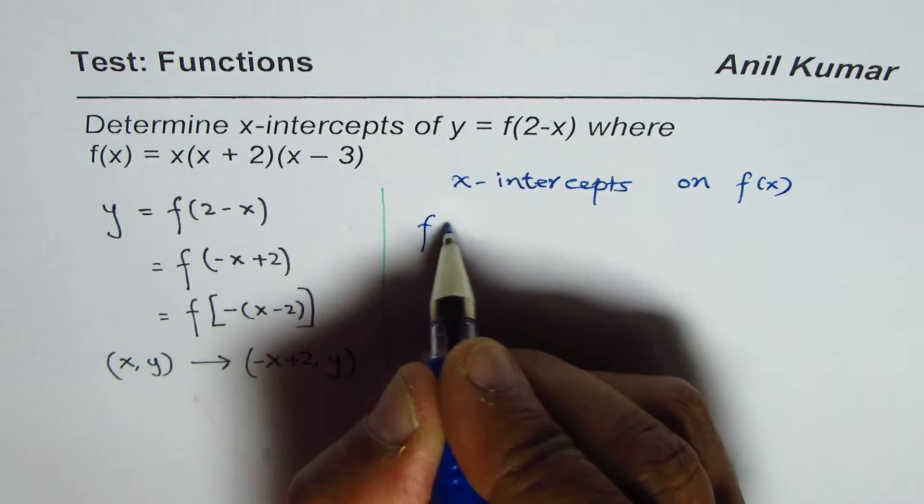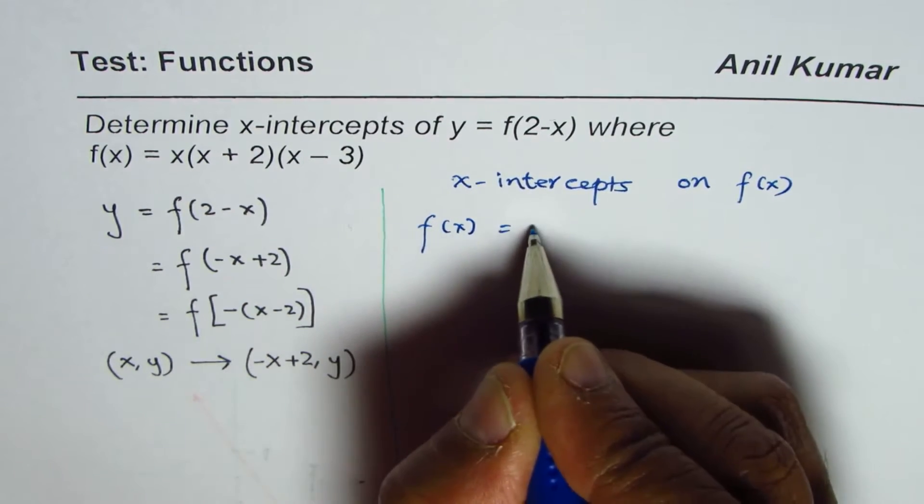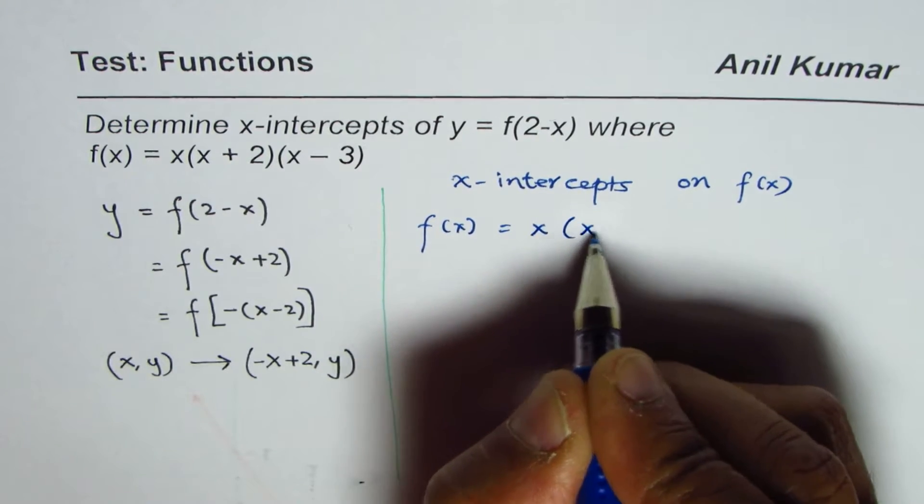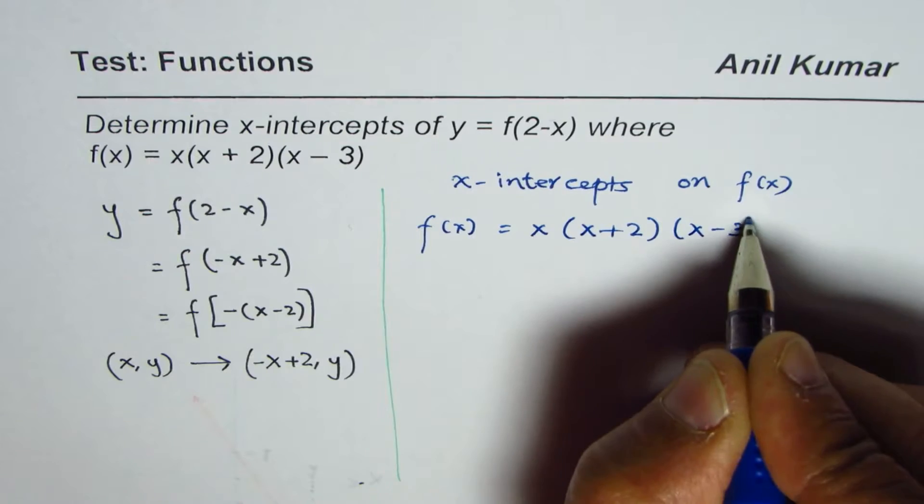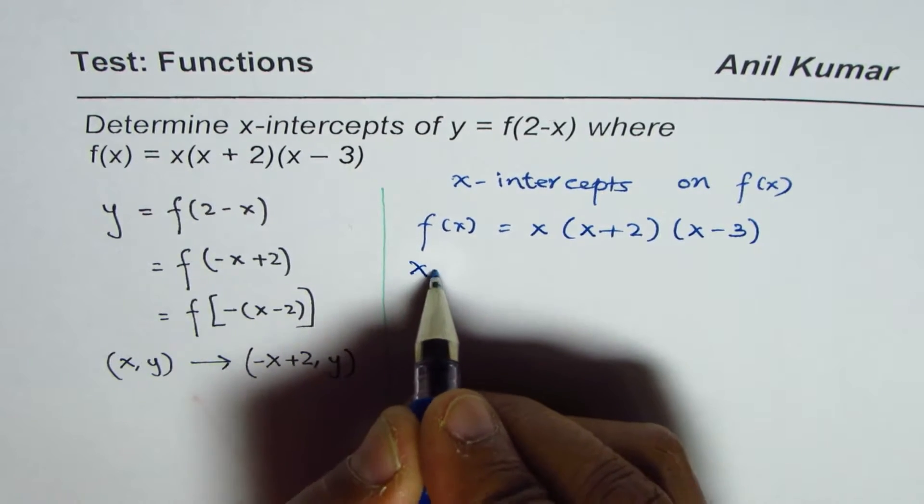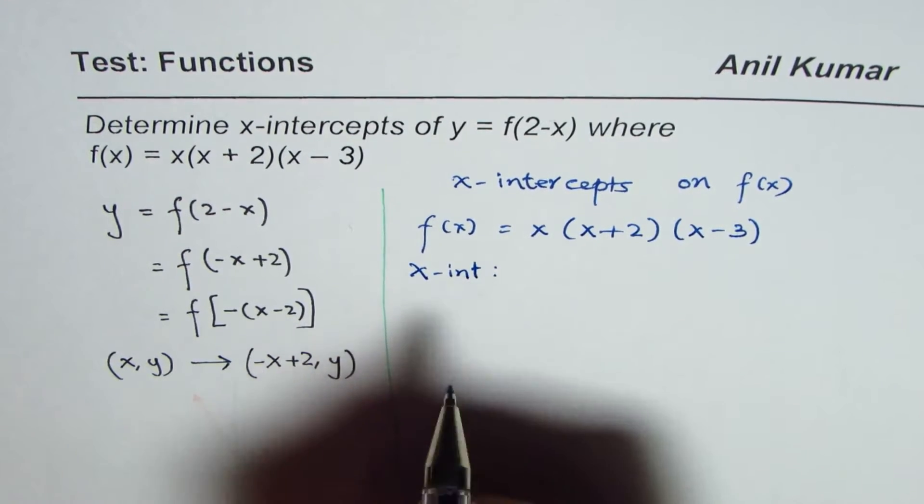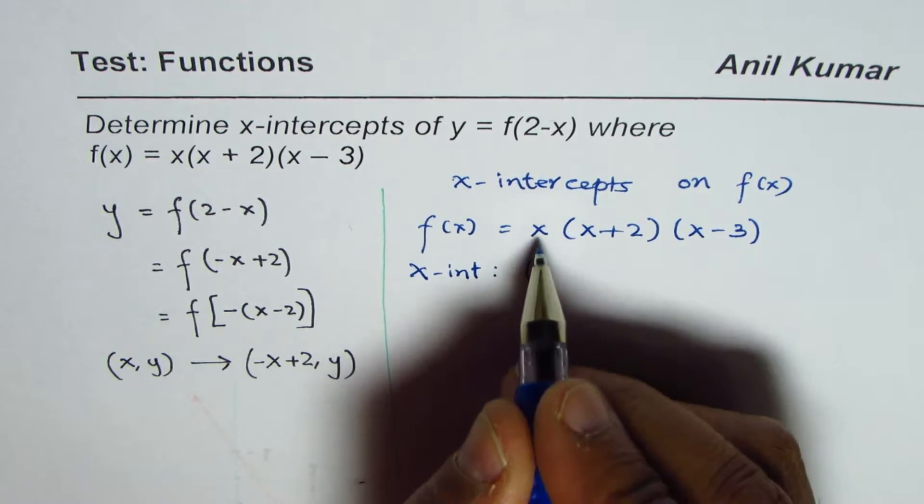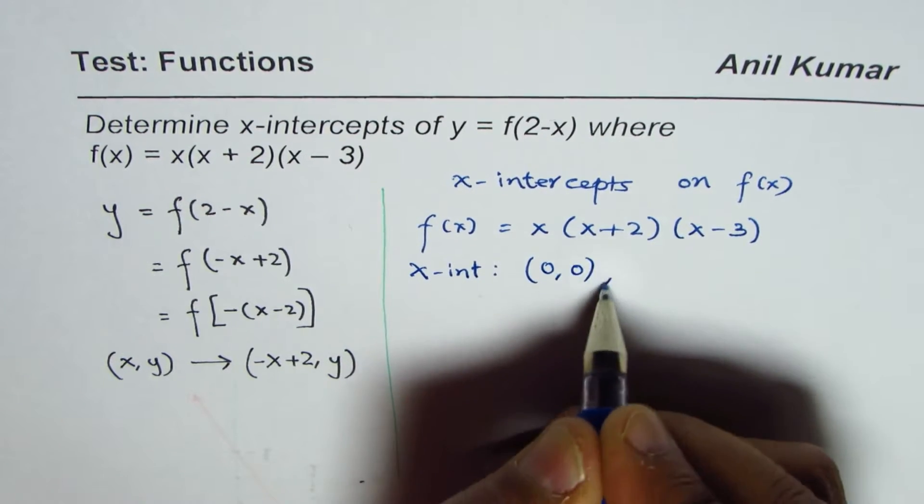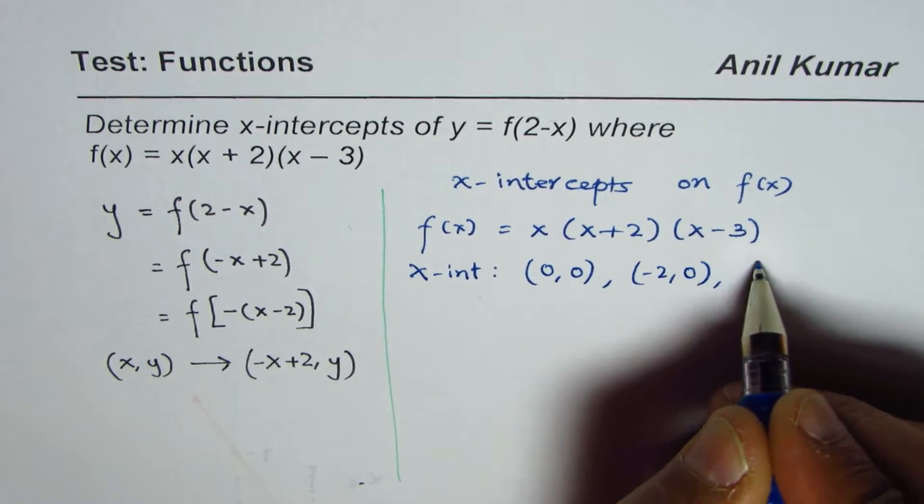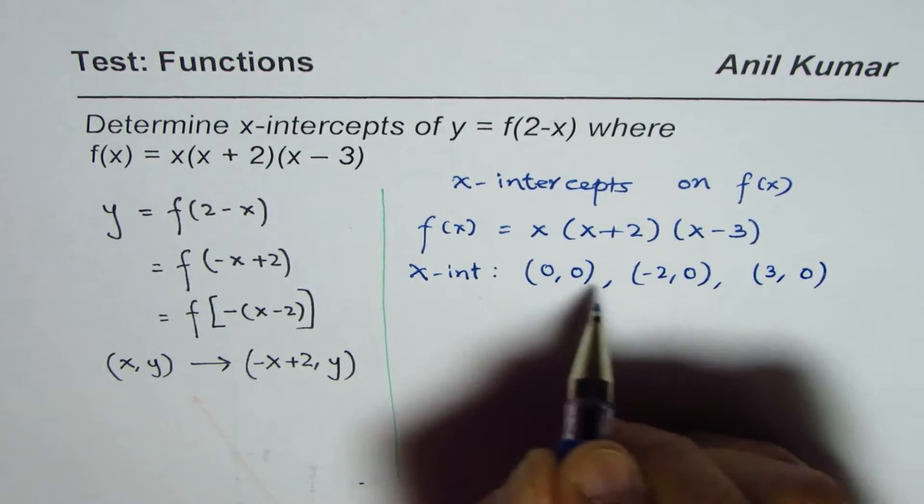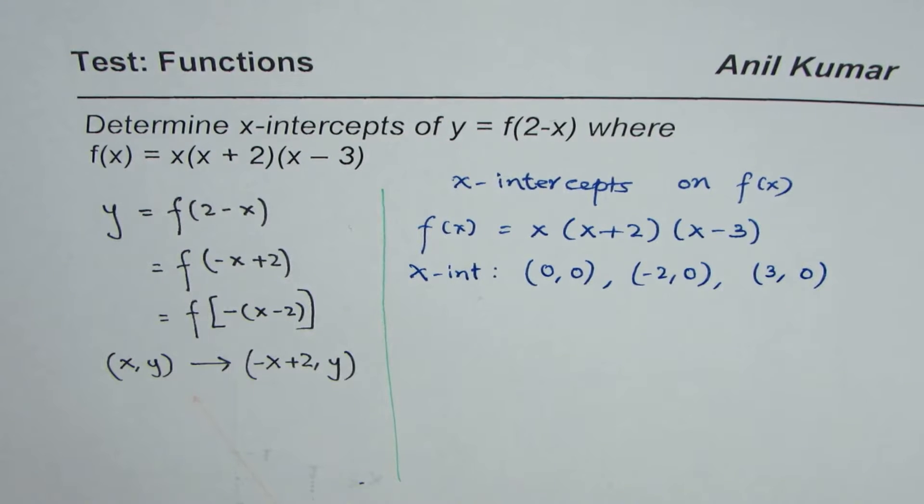So let's find x-intercepts on f of x. Now f of x is given to us as equal to x times x plus 2 times x minus 3. So clearly, there are three x-intercepts. So in this case, x-intercepts are at x equals 0, y equals 0, this one is at minus 2, 0, and the third one is at 3, 0. So these are the three x-intercepts on f of x.